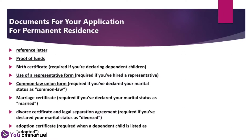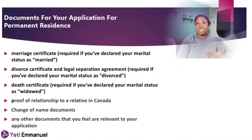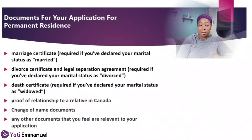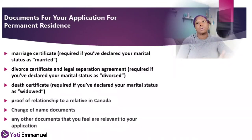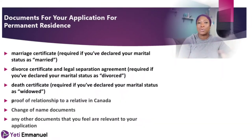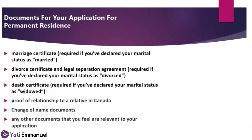If you're married, you'll need your marriage certificate or common law certificate, and all names must match across all documents. If you've changed your name, include the change-of-name document and newspaper publication. If you're divorced, include the divorce or separation certificate. If any family members are deceased, include their death certificates. If you have relatives in Canada — a brother, sister, parents, or grandparents — you'll also need to prove that relationship, such as through birth certificates on both sides.